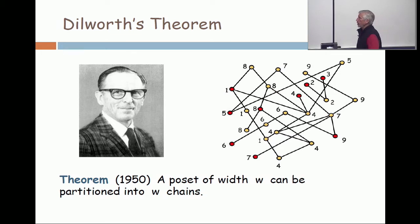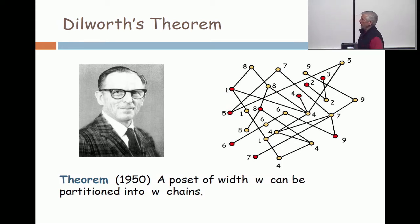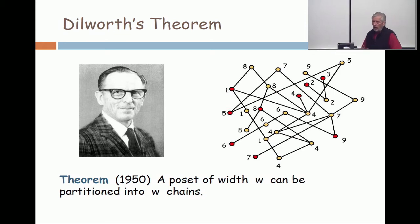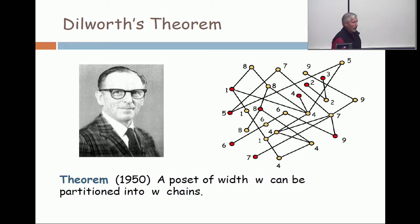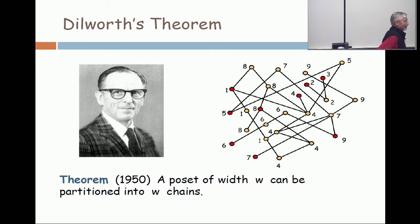His theorem is that a poset of width W can be partitioned into W chains. Unlike the preceding dual result, this one is going to be much harder. This is a real theorem. The other one is just kind of an observation.